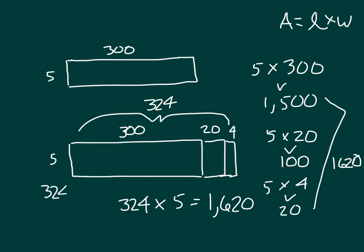Let's do a quick standard algorithm. Look over here. 5 times 4 is 20. Write 0, regroup the 2. 5 times 2 is 10, plus 2 is 12. Write 2, regroup the 1. And 5 times 3 is 15, plus 1 is 16. Or 1,620, just as we had figured out with this area model.